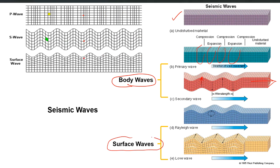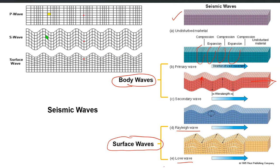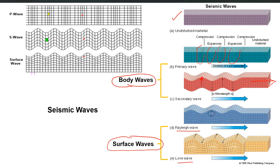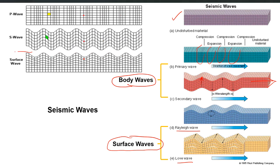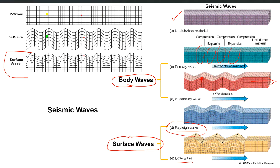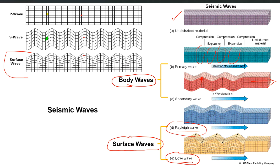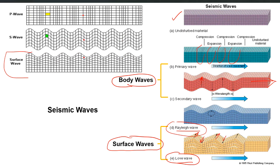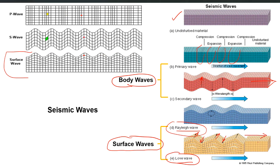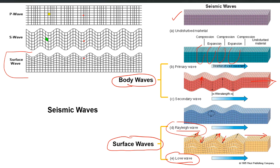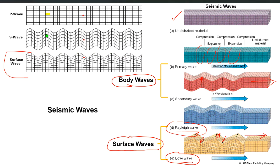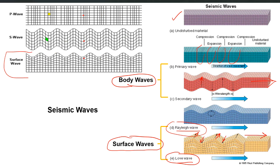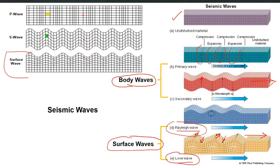Surface waves themselves have two types: Rayleigh waves and Love waves. The Rayleigh wave is a rolling motion on the surface — the particle will move up and down. The Love wave is the second type, where particles are moving sideways — in the lateral direction — as the wave propagates. This is a complex kind of wave which shears the particles in the lateral direction, perpendicular to the direction of propagation. Both of these waves are concentrated towards the surface and are called surface waves.